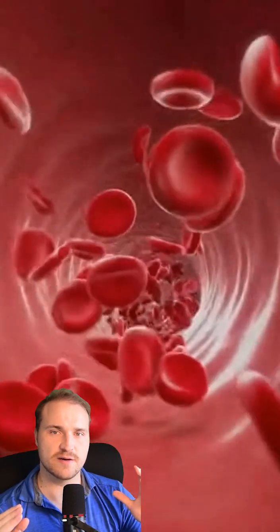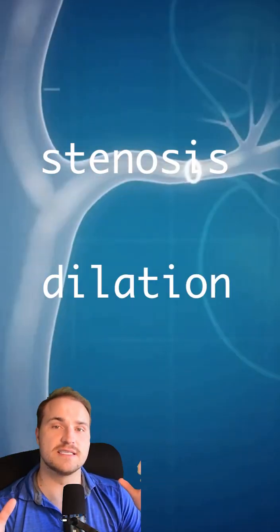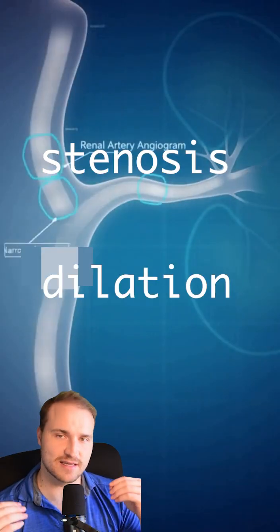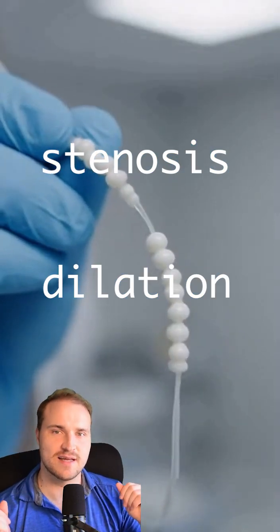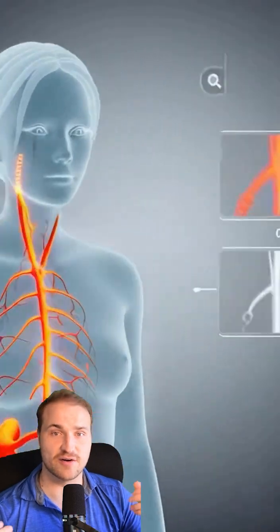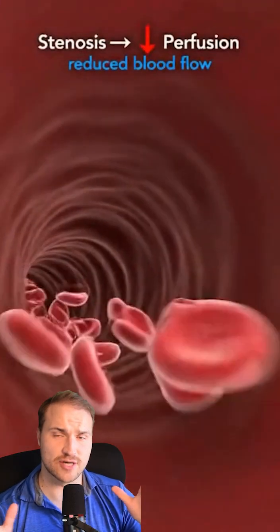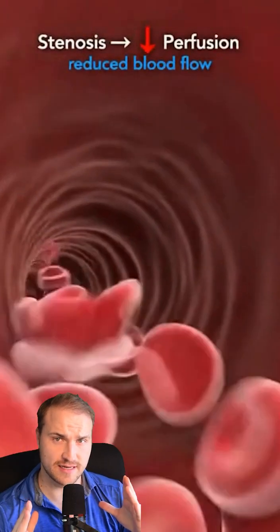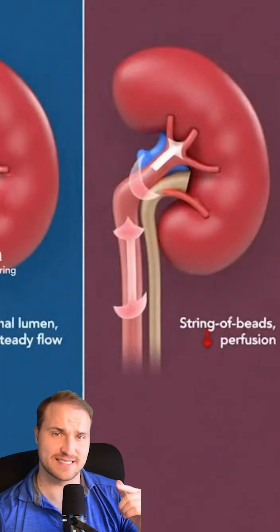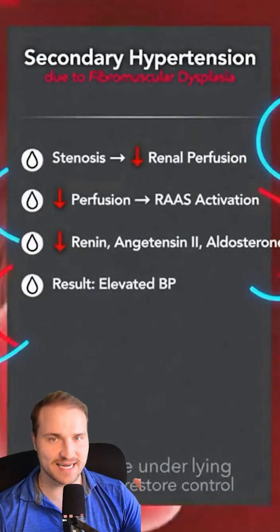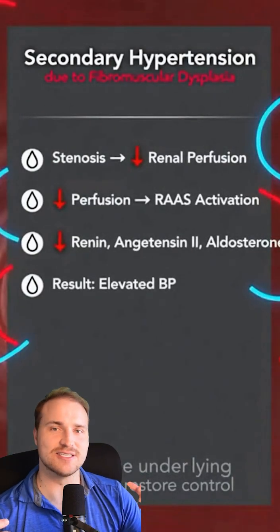In fibromuscular dysplasia, the arterial wall overgrows, and that creates alternating areas of stenosis and dilation, giving the classic string of beads pattern on angiogram. The renal artery narrowing drops perfusion, and this activates the RAS system causing secondary hypertension.